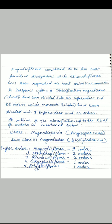In Dahlgren's system of classification, Magnoliidae (dicots) have been divided into 25 superorders and 85 orders, while monocots, i.e., Liliidae, have been divided into 8 superorders and 25 orders.